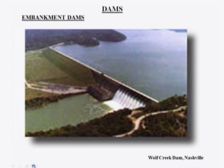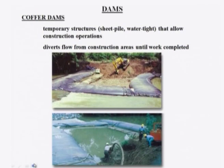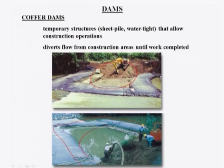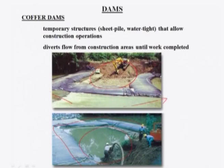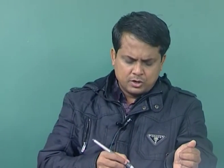One example of an embankment dam is Wolf Creek Dam in the United States. Then there is the cofferdam — these are temporary structures made up of sheet piles or water-tight materials that allow construction operations. They temporarily block water flow so that construction can proceed on one side, diverting flow away from the construction area.